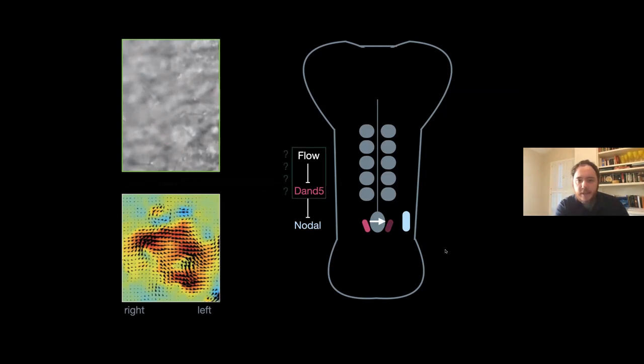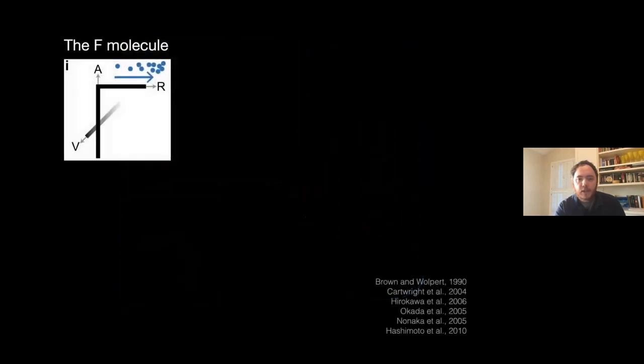What's the result of this fluid flow? I want to introduce Dand5, another oppressor of the nodal pathway, expressed initially symmetrically around the edges of the node. The result of fluid flow towards the left is to repress Dand5 on the left. Because this is a repressor of nodal, this allows nodal to overcome some threshold and activate on the left-hand side. This is how the field believes symmetry is first broken in the embryo.